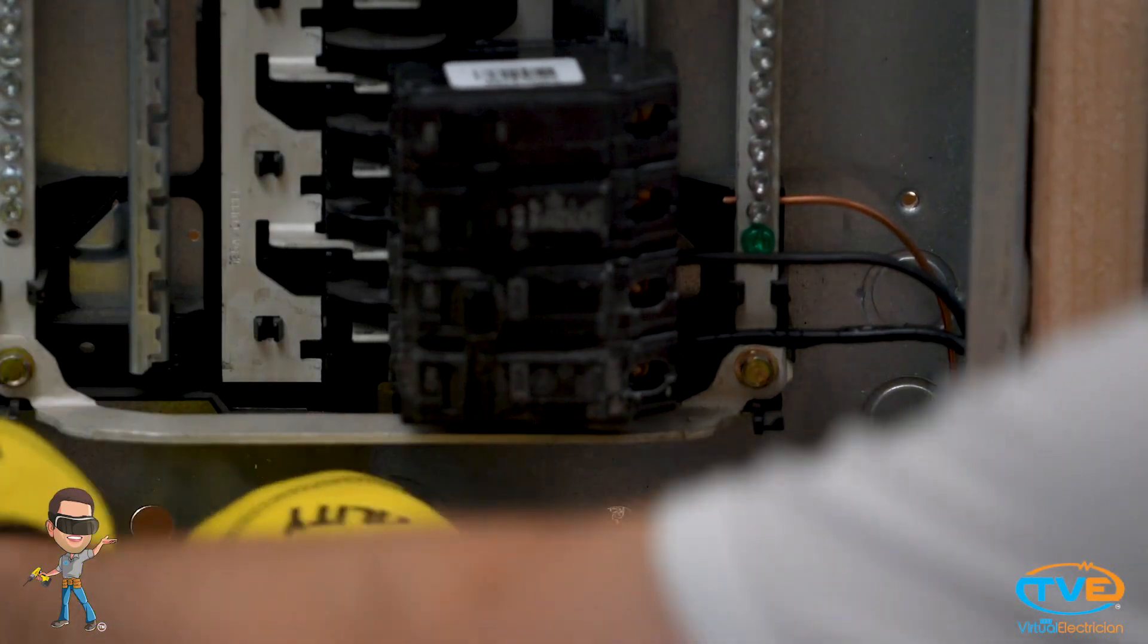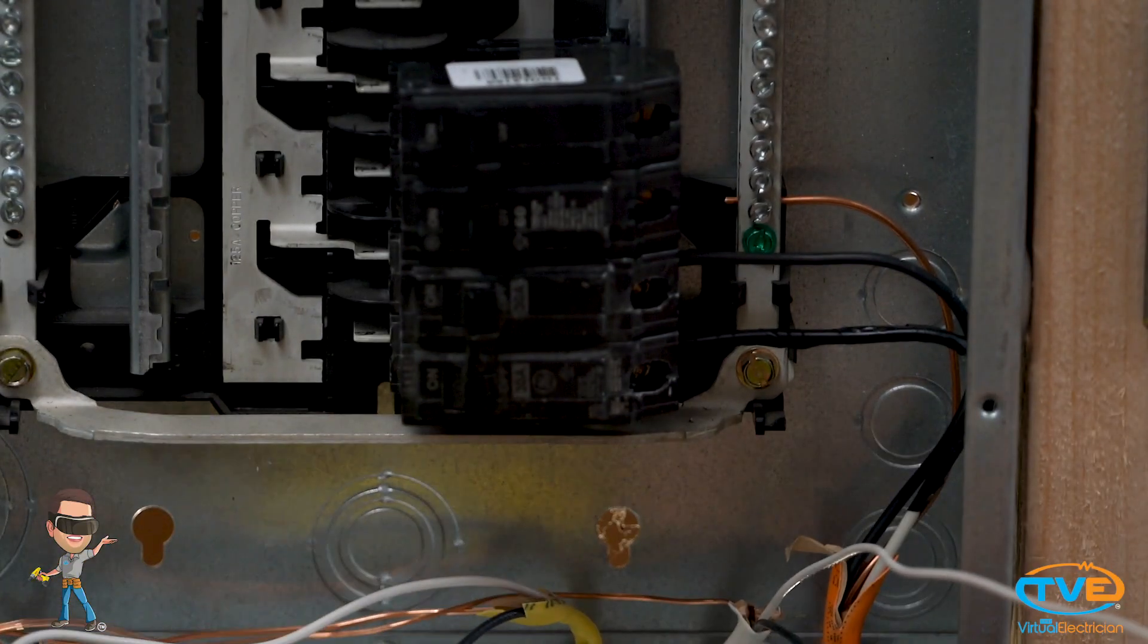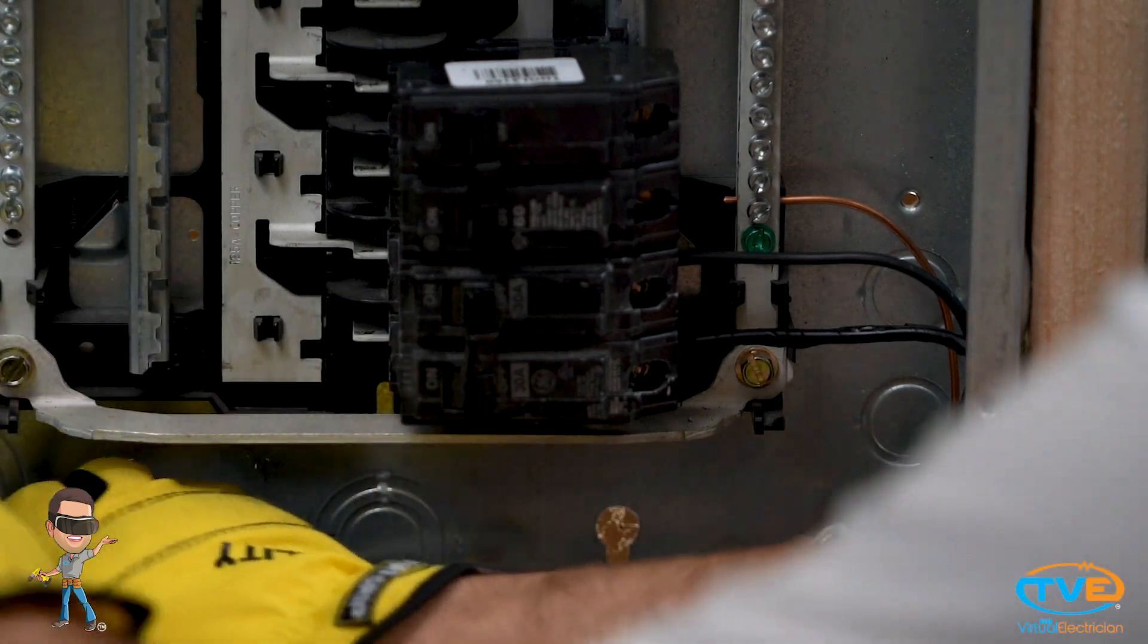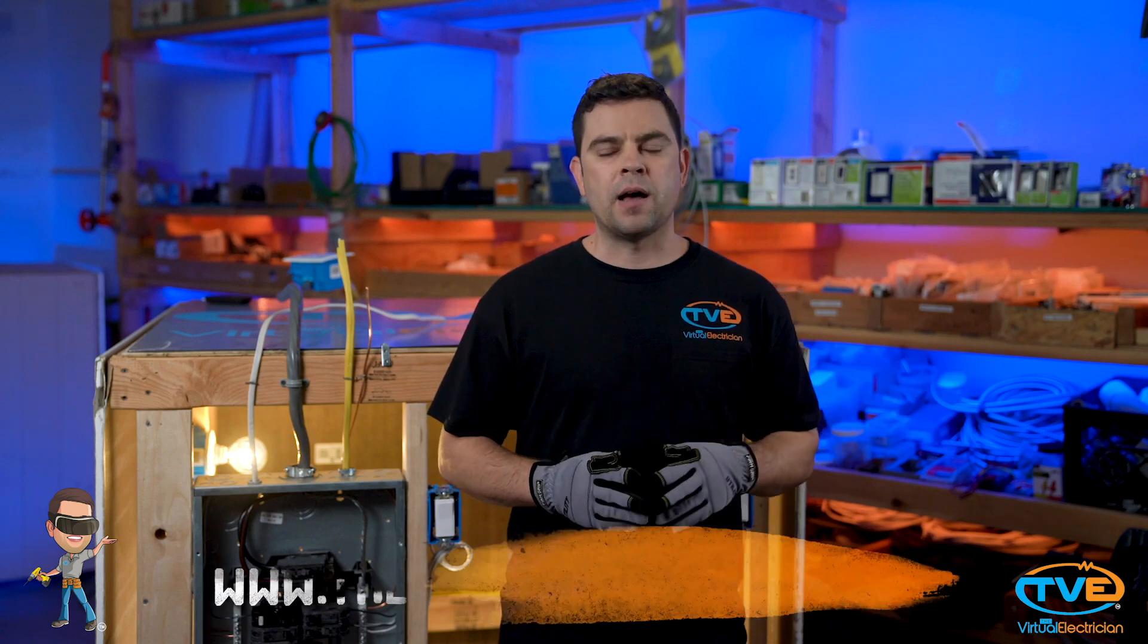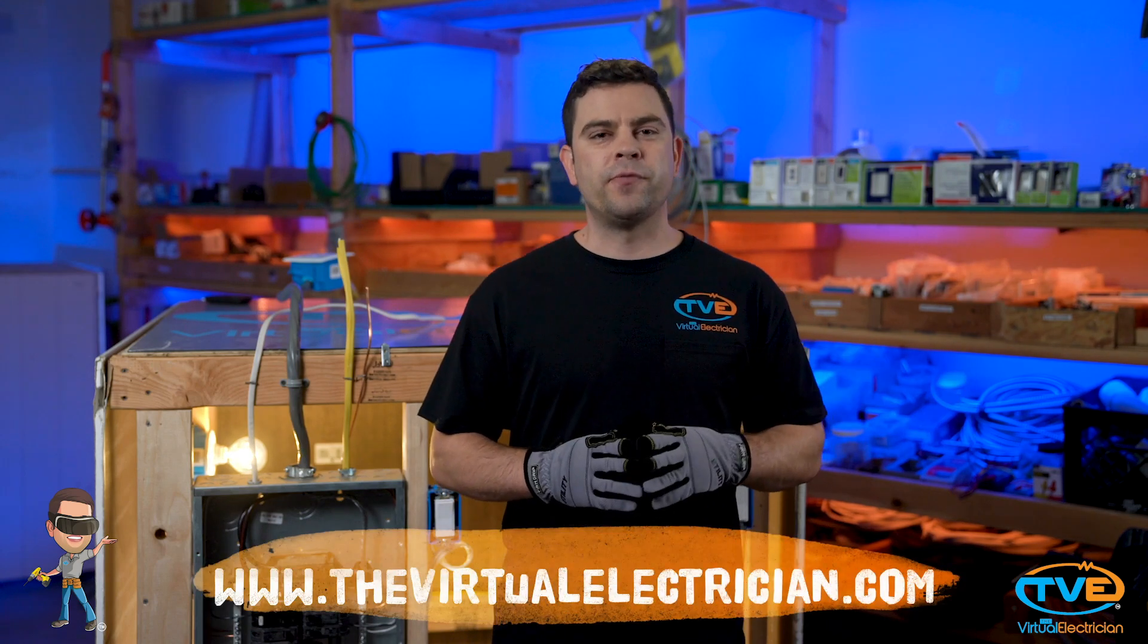Remove the knockouts from your panel cover. Now all you have to do is label your panel. Visit TheVirtualElectrician.com for more tips, tricks, and electrical fixes.